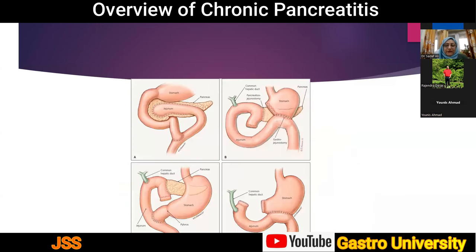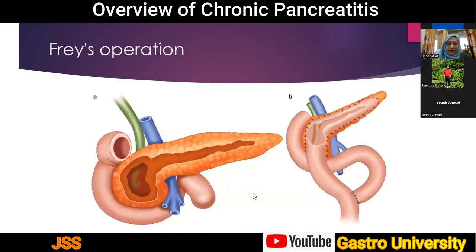Pictorially, the lateral pancreaticojejunostomy involves opening the pancreatic duct and placing a Roux-en-Y jejunal limb over it completed with a jejunojejunostomy. The classic Whipple procedure removes the distal stomach, with pancreaticojejunostomy, hepaticojejunostomy, and gastrojejunostomy. In the pylorus-preserving variant, the pylorus is preserved. In total pancreatectomy, the duodenum, pancreas, and spleen are all removed with hepaticojejunostomy and gastrojejunostomy. In the most commonly practiced procedure, the pancreas is opened preferably at the head-neck junction, the dilated duct aspirated as guidance, then opened both proximally and distally.